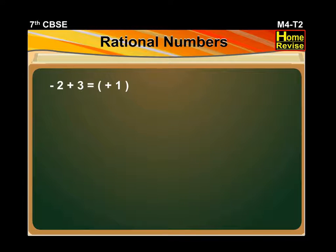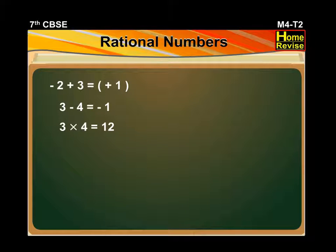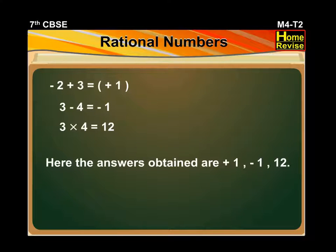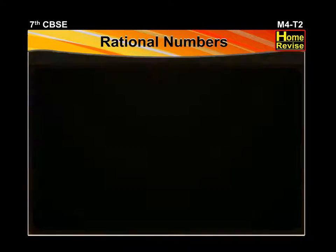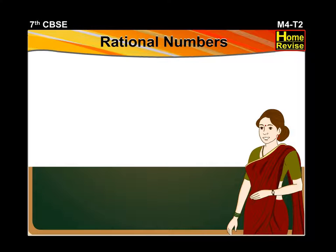Minus 2 plus 3 is equal to plus 1. 3 minus 4 is equal to minus 1. 3 into 4 is equal to 12. The answers obtained are plus 1, minus 1, and 12. Can you tell me which type of numbers are these? A student answers: these are integers. Correct — integers can be added, subtracted, and multiplied to get integers.